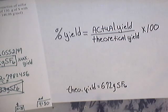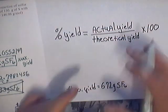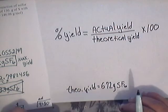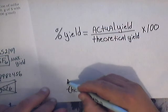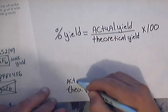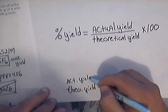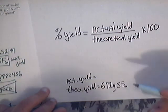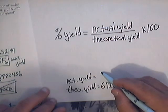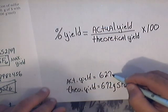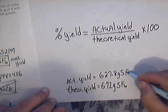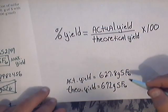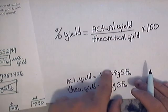Let's say that you were in a laboratory, and you did the experiment, the reaction happened, you got your product, and after everything was said and done, after you weighed the product, you only yielded 627.8 grams of sulfur hexafluoride.